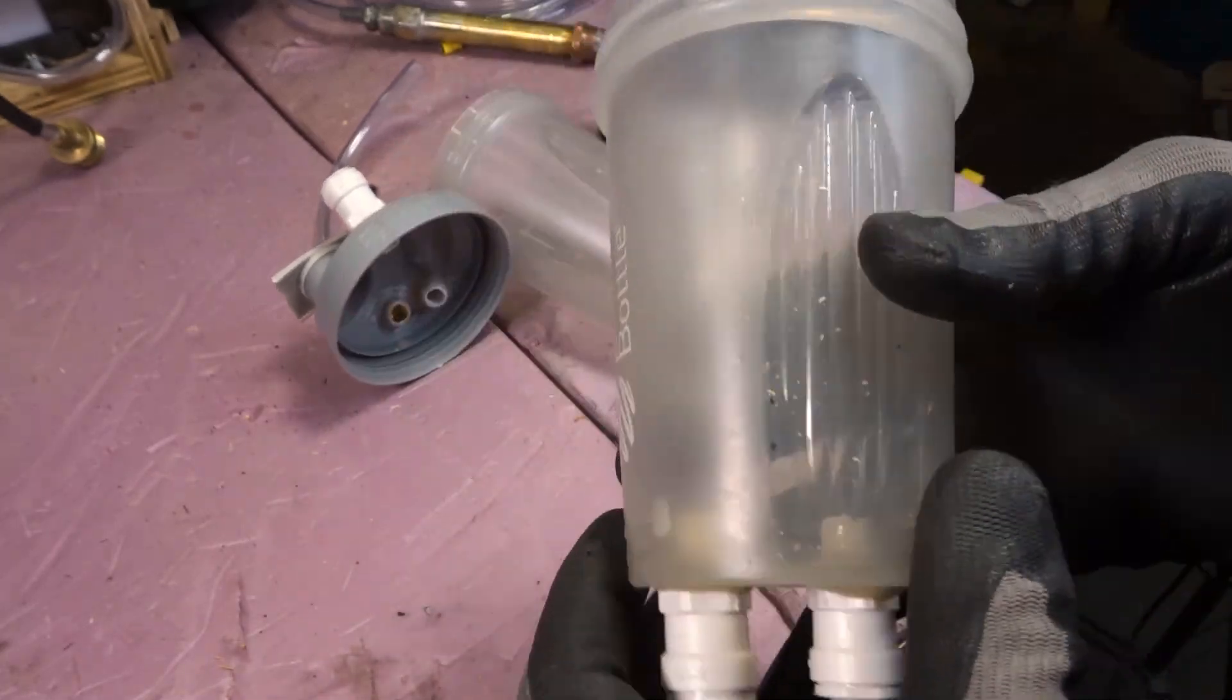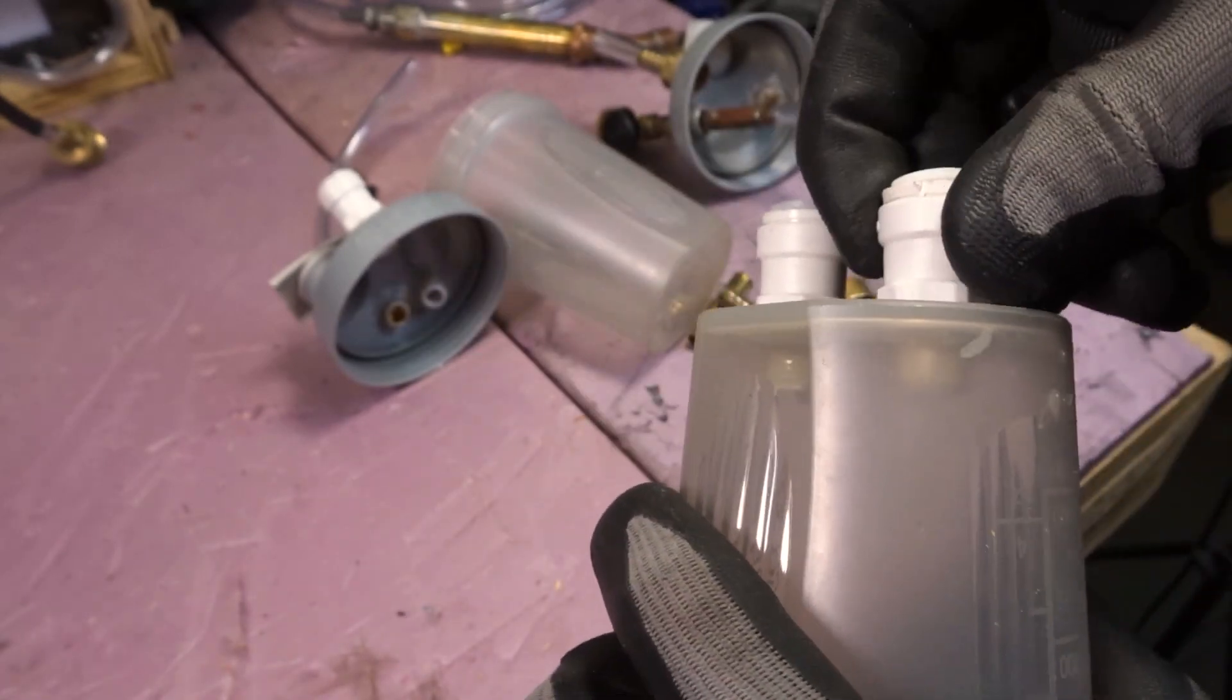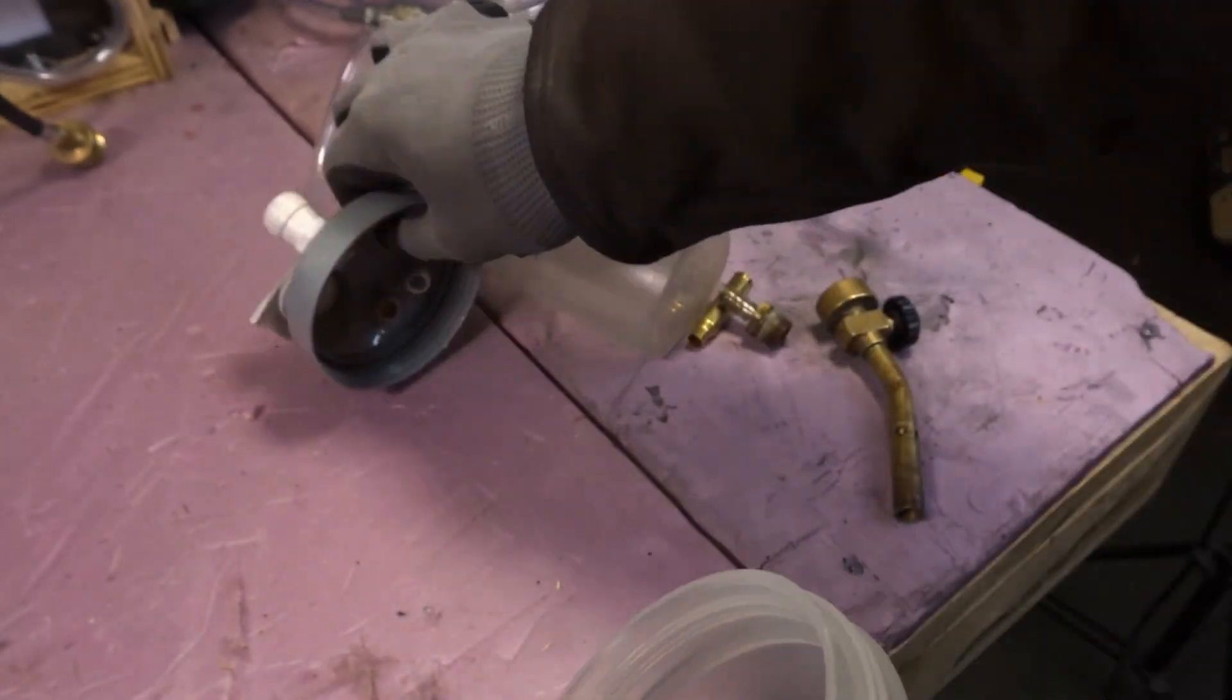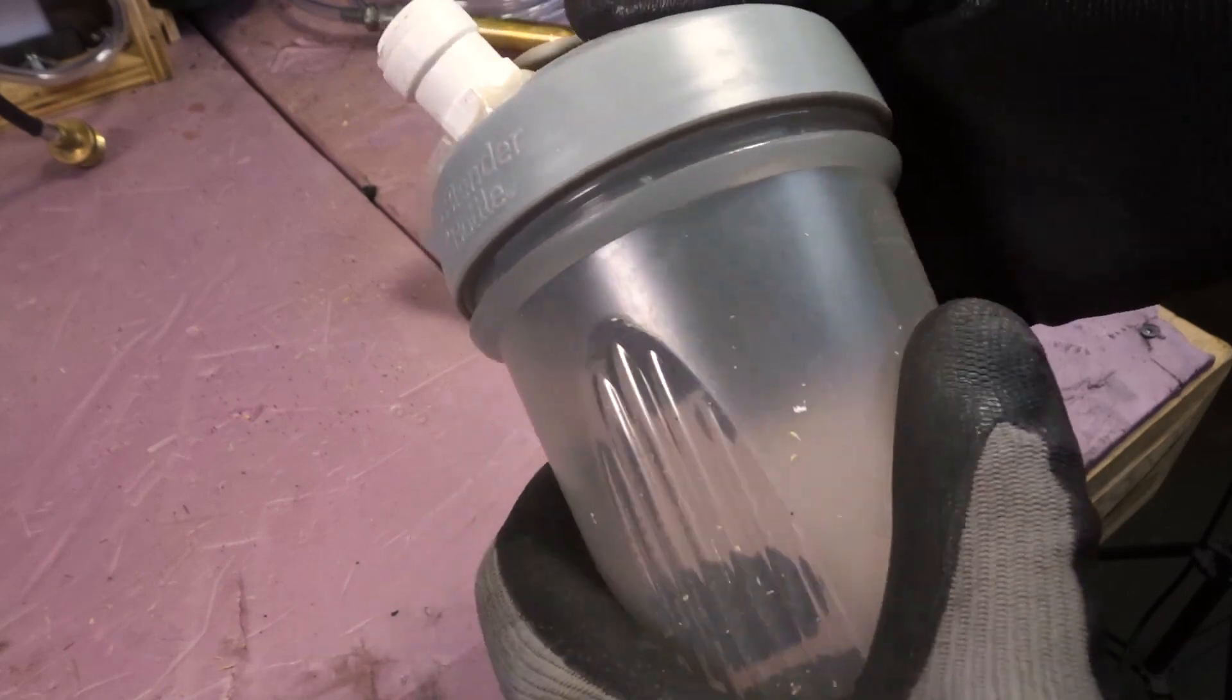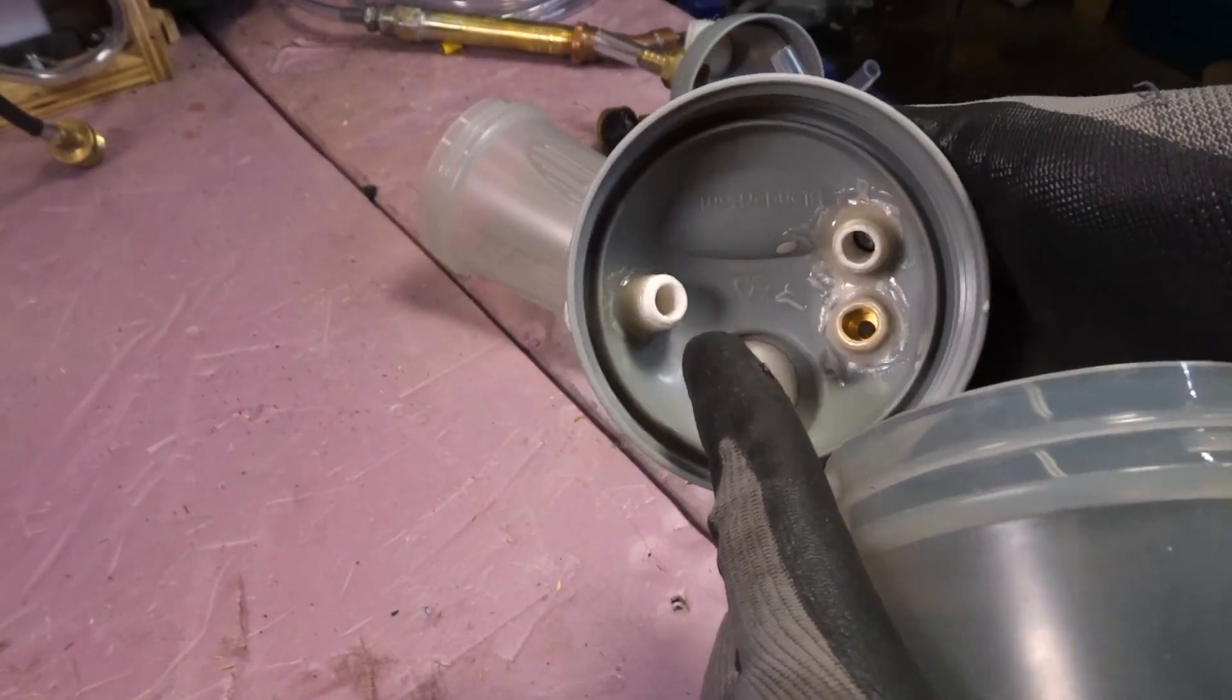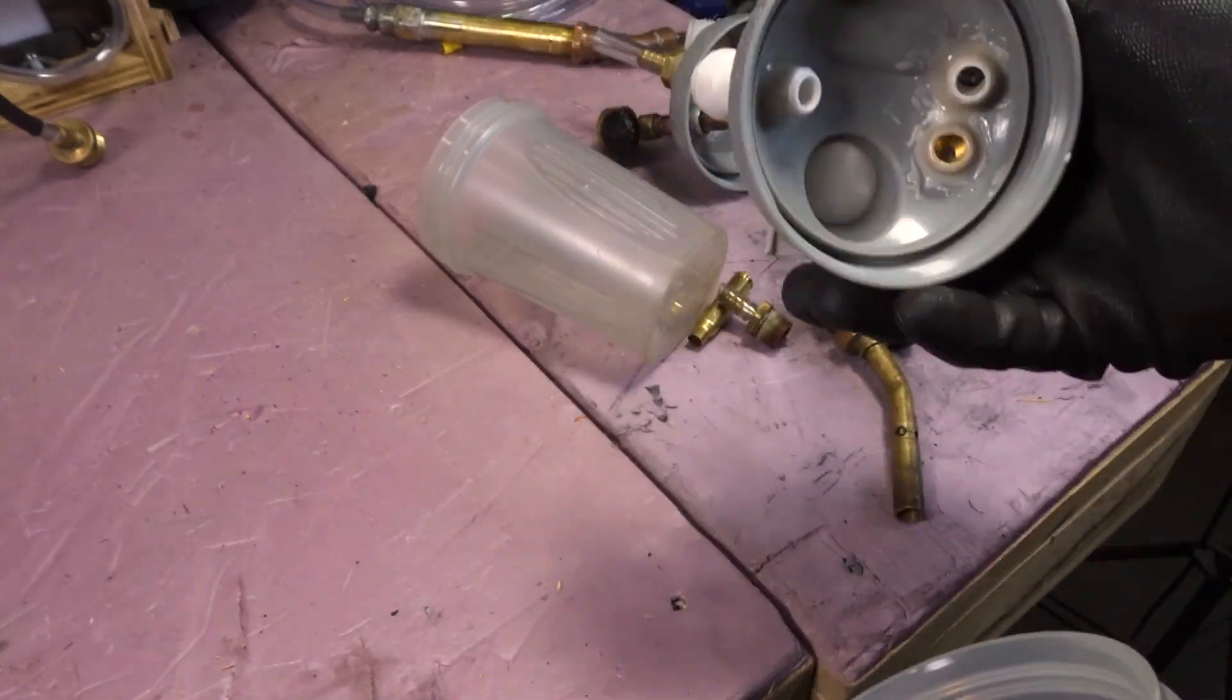Now here is the reservoir. So we just drilled holes in the bottom, used these push-to-connect fittings, and the same on the lid here. It's all just epoxied in. The hole is just big enough so that the last couple threads are able to bite, because this is a tapered thread so that it gets bigger.